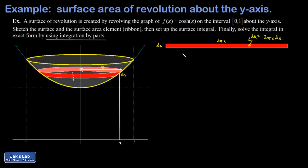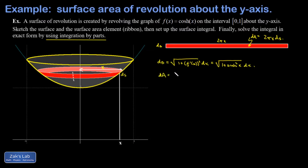We need a reminder of how to write the arc length element ds, and this is where the hyperbolic cosine curve comes into the setup. The arc length increment is given by the square root of 1 plus the derivative of the curve squared, times dx. The derivative of cosh is just sinh, the hyperbolic sine function. So the area increment becomes 2π x times the square root of 1 plus sinh²(x), dx.